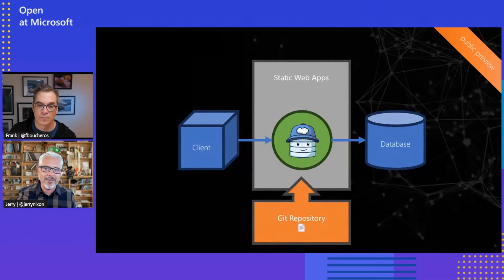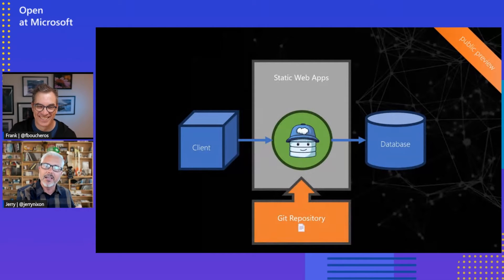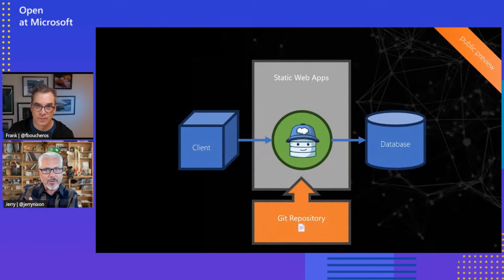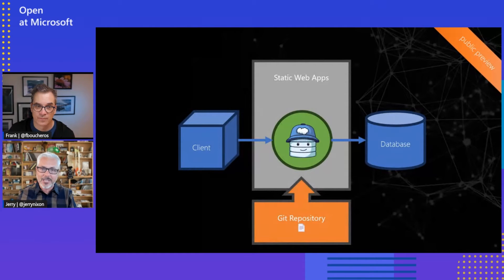How does all that get set up? That's kind of the beautiful part of it. You go into static web apps and say this is my Git repository, and you authenticate to it. It goes ahead and adds the actions for you, sets everything up, and handles all the token permissions for you between the two. From that point forward, all you need to do is commit all of your changes and let those actions kick in and move everything up.